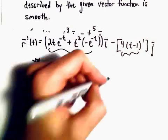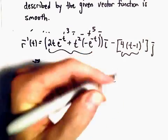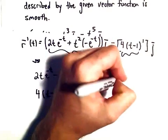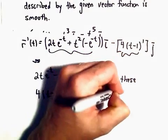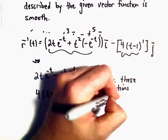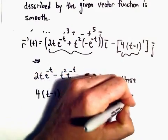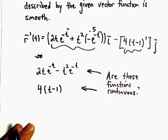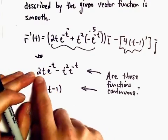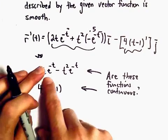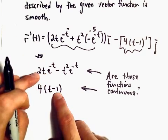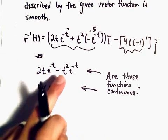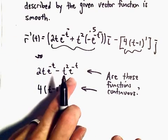So we have to ask ourselves, are these functions continuous? There was no restriction on our value for t. 2 times t, that's going to be continuous. e to the negative t is a continuous function. If you multiply continuous functions, you get a continuous function. Same thing with t squared times e to the negative t.